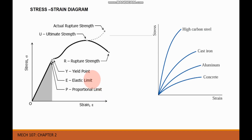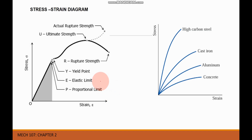Next is the elastic limit. This is the stress beyond which the material will not return to its original shape when unloaded, but will retain a permanent deformation called permanent set. In other words, the material will not go back to its original shape — there is a permanent deformation at the elastic limit.